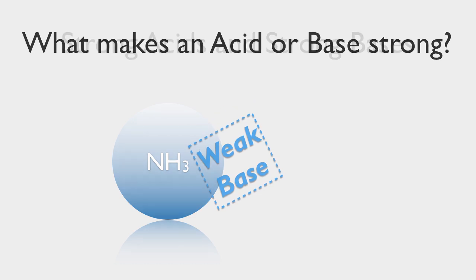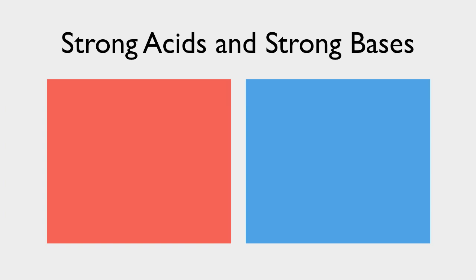There are only a few strong acids and strong bases. For IV chemistry, you specifically need to remember hydrochloric, nitric, and sulfuric acids. You should also be familiar with hydroiodic, hydrobromic, perchloric, and chloric acids, as most chemists also consider those to be strong acids.